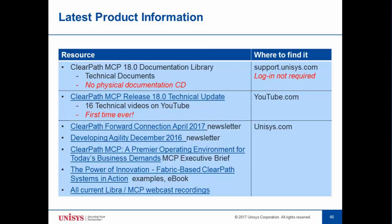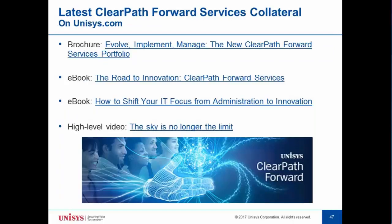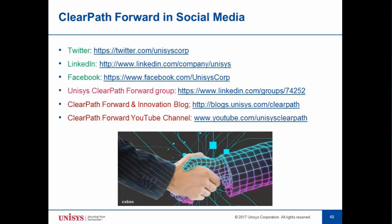Unisys.com has additional resources including the ClearPath Connection newsletter, and if you use Agile Business Suite, the Developing Agility newsletter. There are also executive briefs, e-books, and recordings of all past webcasts. Unisys.com also has information on ClearPath Forward services designed to help you take advantage of ClearPath Forward products. ClearPath Forward is also available on social media — Twitter, LinkedIn, and Facebook — and there is a discussion group and blog on Unisys.com, plus the link to the ClearPath Forward YouTube channel.